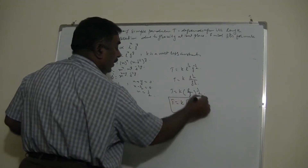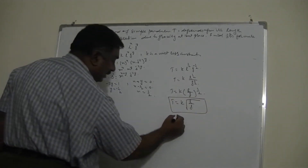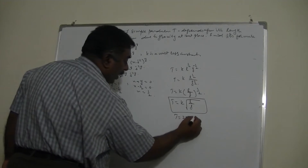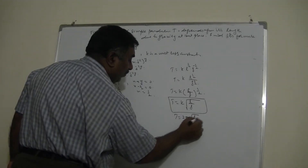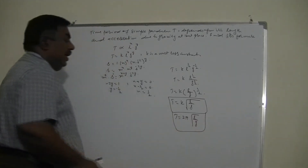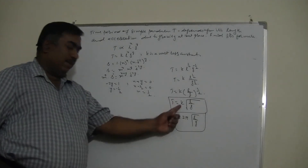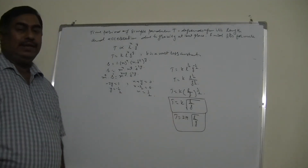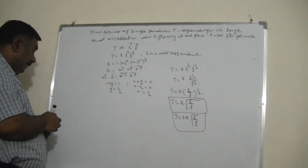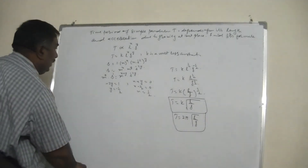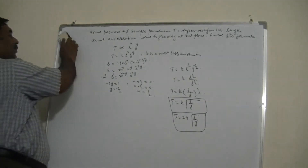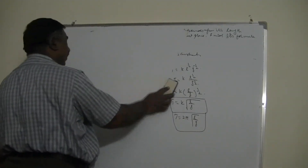So T = k√(l/g). The actual formula is T = 2π√(l/g), but we cannot find the value k = 2π from this method — that must be determined from experiments.